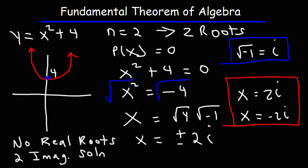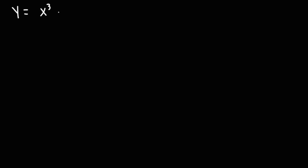According to the fundamental theorem of algebra, we have a degree 2 polynomial and got exactly two roots, but because the graph does not touch the x-axis those roots are imaginary. Now let's consider a cubic function: y equals x cubed minus 2x squared plus x minus 2. Using the fundamental theorem of algebra, determine the number of roots this polynomial has, and also determine the types of roots — are they real or imaginary, and how many of each?